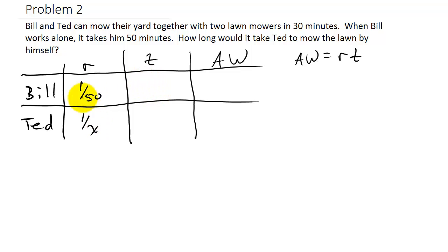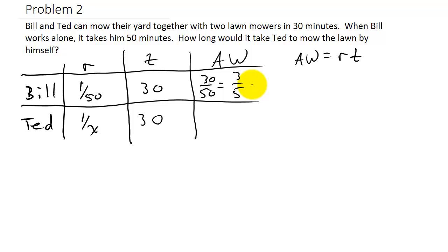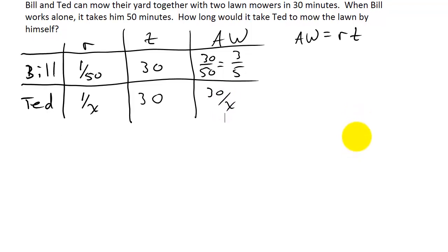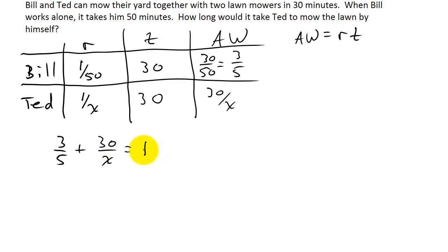When working together, they mow for a total of 30 minutes. Bill's amount of work is 30 over 50, which reduces to 3 over 5. Ted's amount of work is 1 over x times 30, which is 30 over x. So our equation is: the percentage Bill mowed, 3 over 5, plus the percentage Ted mowed, 30 over x, equals 1.